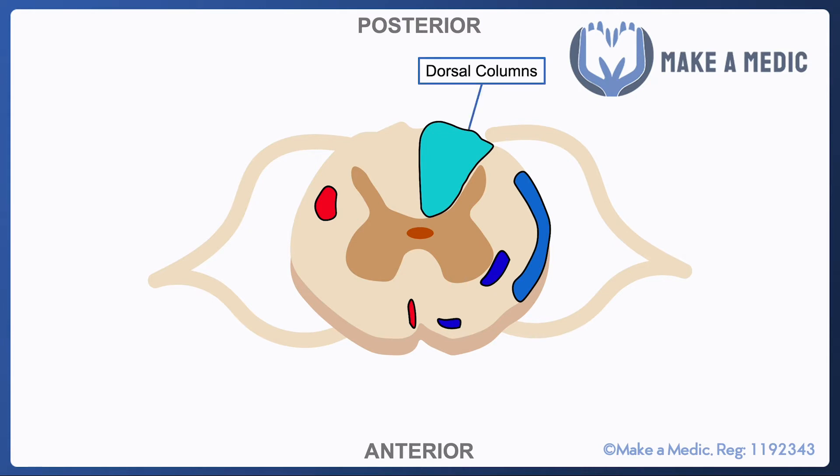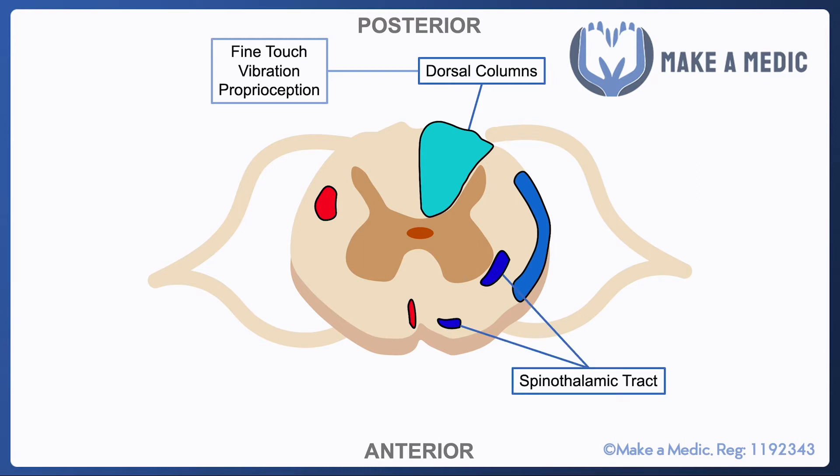At the back of the spinal cord we have the dorsal columns, which are responsible for fine touch, vibration, and proprioception. These are ascending columns because they take information from various sensory receptors and transmit it up to the brain. We also have the spinothalamic tracts, marked in dark blue, which are responsible for pain and temperature sensation.